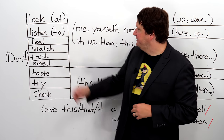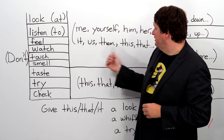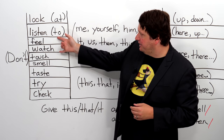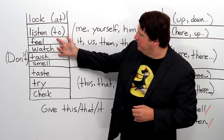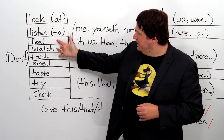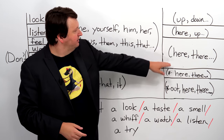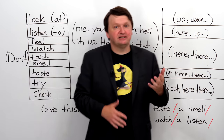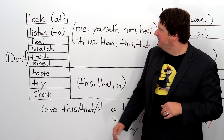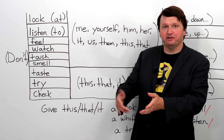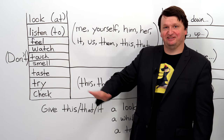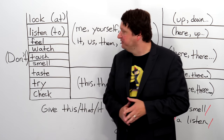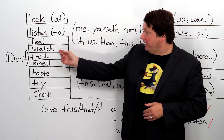Next we have feel. Feel this, feel that — it's similar to saying touch, so touch and feel are very much related. You can say feel here, feel there, feel it. For example, if you have a pet with really soft fur, you might say feel his fur or feel her fur.